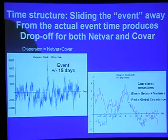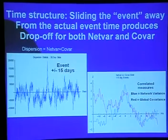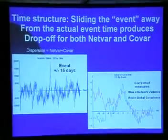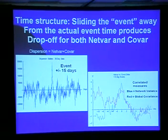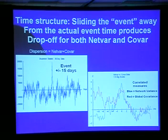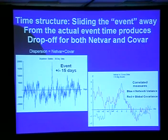Going on to some of the other structure: we see that if we move the event from its real time — slide it toward the future or toward the past — we quickly lose the high departure from expectation and enter a kind of random space. This also answers the question of whether there are a lot of other spikes in the database. The spikes associated with predefined events are themselves spectacular. The correlation between the two measures is shown in the right-hand figure — they're both centered on the time of the real event.